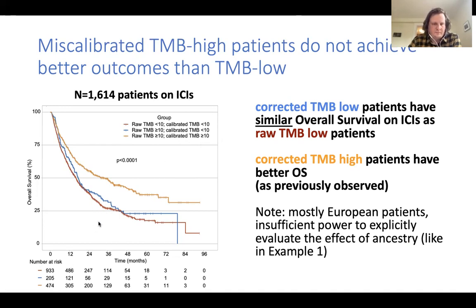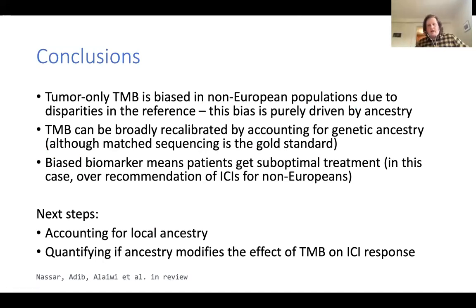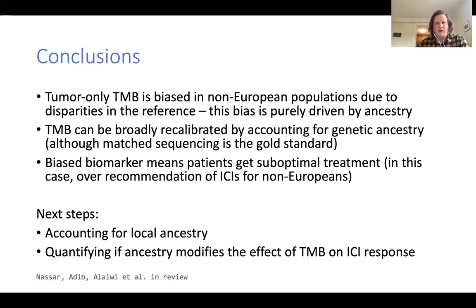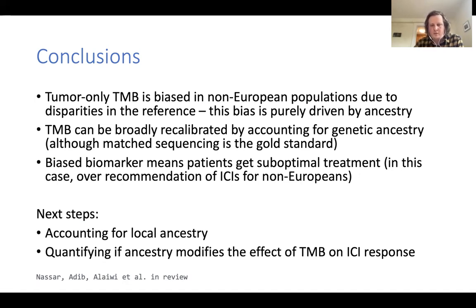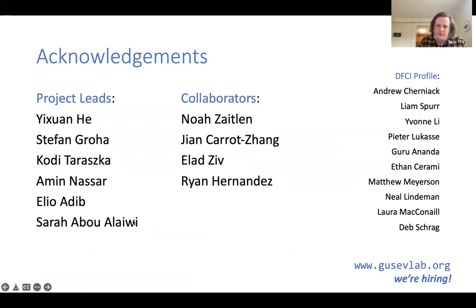In a cohort of 1,600 patients on immune checkpoint inhibitors at Dana-Farber, individuals with a corrected high-TMB estimate have significantly better overall survival as expected from clinical trials. However, individuals thought to have high TMB but corrected to low TMB by our method show survival trajectories not significantly different from the true low-TMB group — meaning they would have been potentially recommended for immunotherapy but don't benefit. This miscalibration disproportionately affects non-Europeans due to under-represented germline reference panels, leading to suboptimal treatment recommendations for these patients.